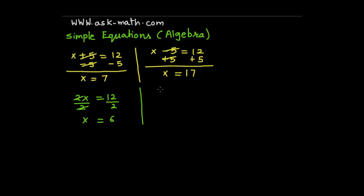Now if I am taking x over 2 is equal to 12. Here x over 2 — there is a division operation. So I am multiplying both sides by 2. So 2 and 2 will get cancelled. So x is equal to 24.